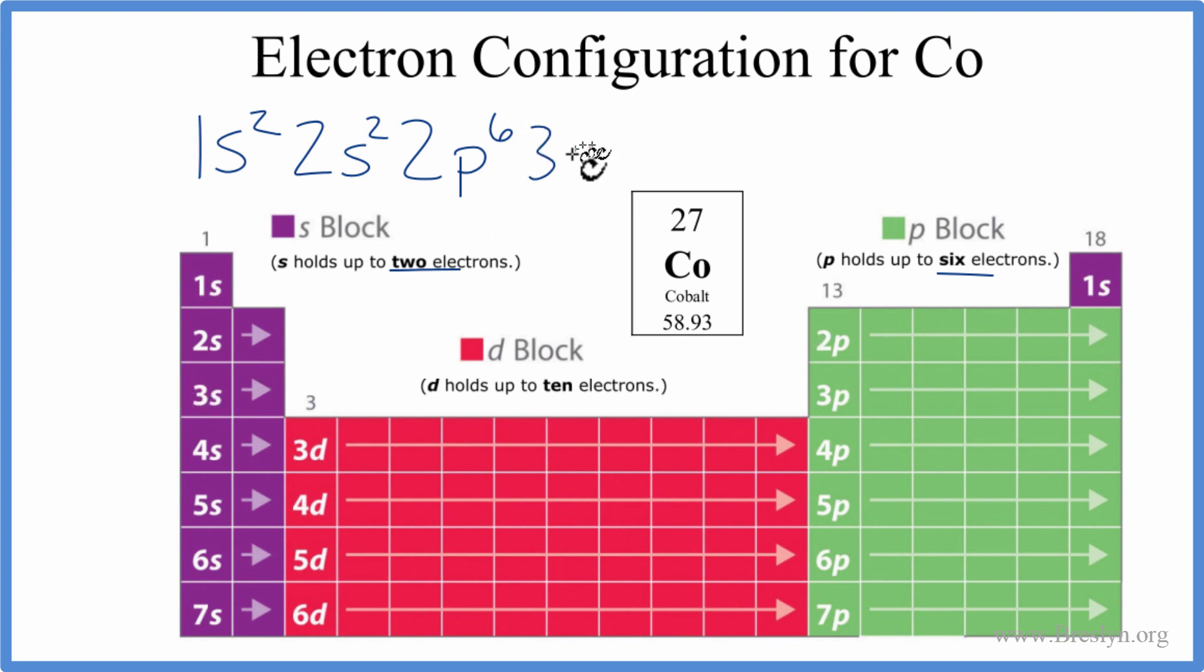2p, 3s2, 3p6. So at this point, we've used 18 electrons, from 3p, 4s2, that's 20, and then we go to the 3d.